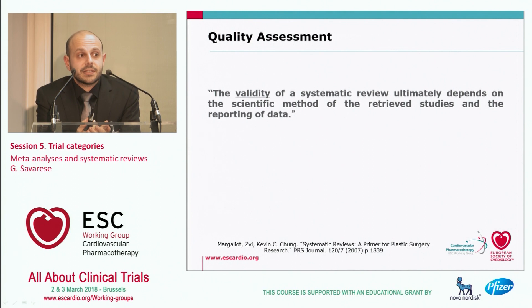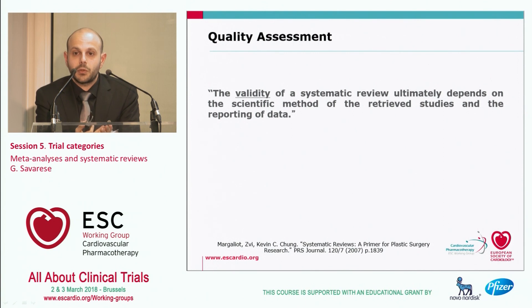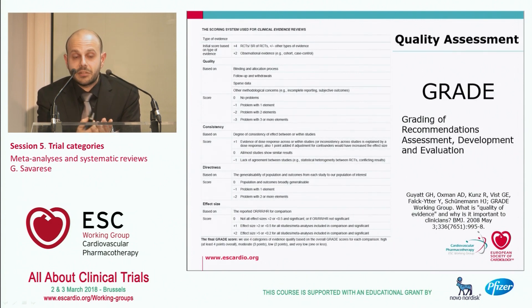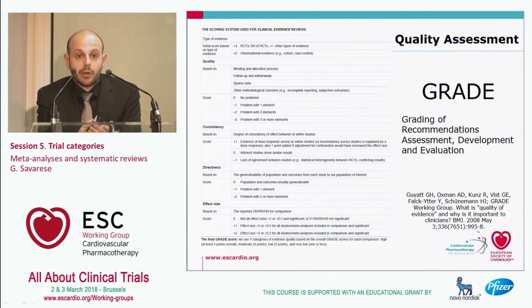The overall quality of a systematic review or meta-analysis depends on the quality of all the studies included in it, so it is important to assess the quality of the included studies. There are several methods to do that. The GRADE method is one of the most commonly used, and it consists of giving a score to studies according to specific criteria. The higher the score, the higher the quality of the study.